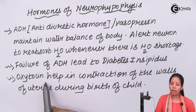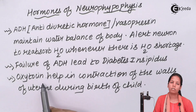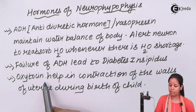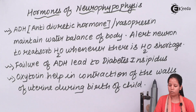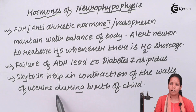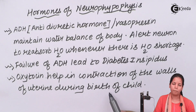The next hormone is oxytocin. Oxytocin helps in the contraction of the walls of the uterus, and that contraction helps in the birth of the child.